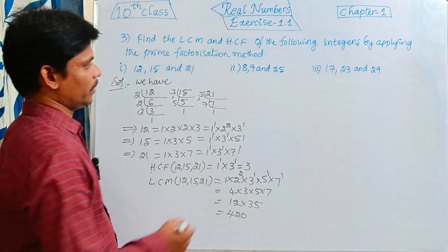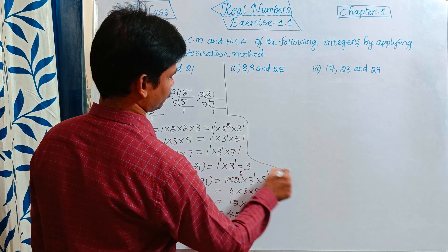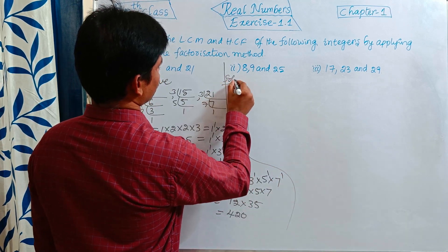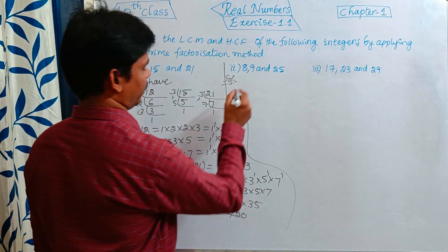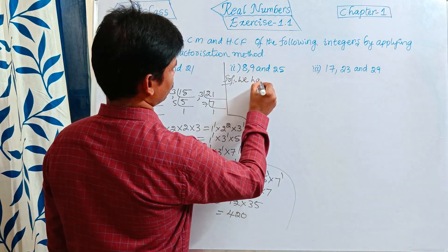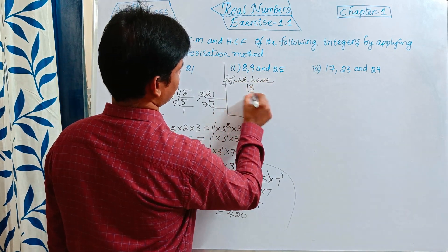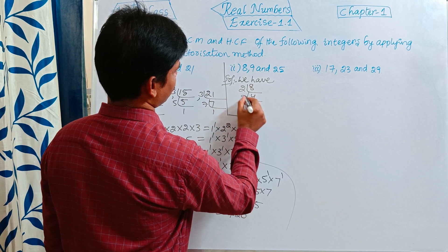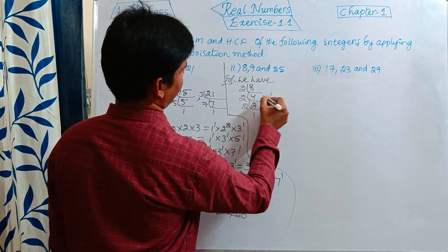Next, using the prime factorization method again. We have the first number 8: 2 × 4 is 8, 2 × 2 is 4, 2 × 1 is 2.